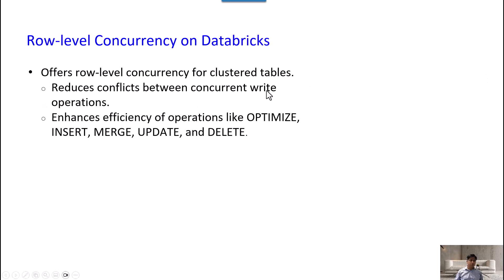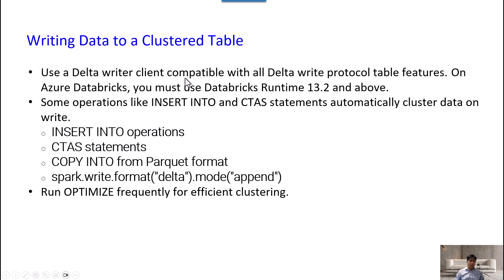Row-level concurrency on Databricks: when you create a clustered table, one key benefit is that it reduces conflicts between concurrent write operations. If two write operations happen on the same table at the same time, Liquid Clustering reduces those conflicts and enhances the efficiency of operations like OPTIMIZE, INSERT, MERGE, UPDATE, and DELETE. This is how row-level concurrency is achieved with the help of clustering.